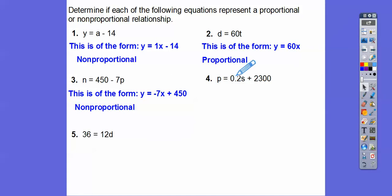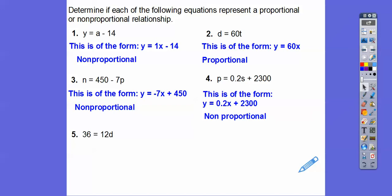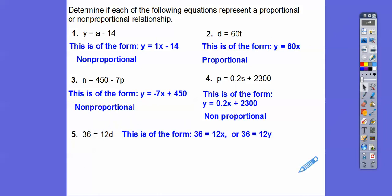y equals 0.2x plus 2300 — non-proportional. How about this one? This one doesn't have a variable, so this could be 36 equals 12x or 36 equals 12y. That's not a line going through the origin, so that one's non-proportional. You need something like y equals mx for it to be proportional.